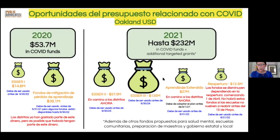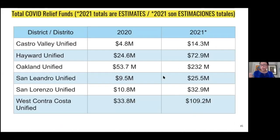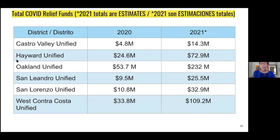We have this available for Hayward, and if you could leave your school district in the chat — here are some of the other districts where PLAN has families. In Hayward last year, the district got more than $24 million in additional money, and this year they will receive more than $70 million. Again, they don't have to spend it all this year — they have several years to spend that money and they have to make a plan.